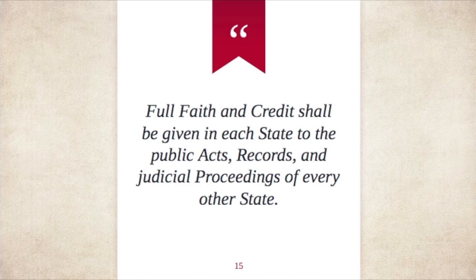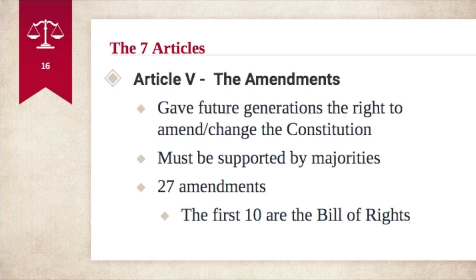Article five covers amendments, and an amendment is a change. Article Five gave future generations the right to amend or change the Constitution when needed. However, it's not a simple process — an amendment must be supported by two-thirds majorities in the House of Representatives and Senate, and must be ratified by three-fourths of the states. Right now we have 27 amendments, and the first ten amendments are what we call the Bill of Rights, which gives Americans freedom of speech, religion, freedom of the press, the right to remain silent, and the right to keep and bear arms.